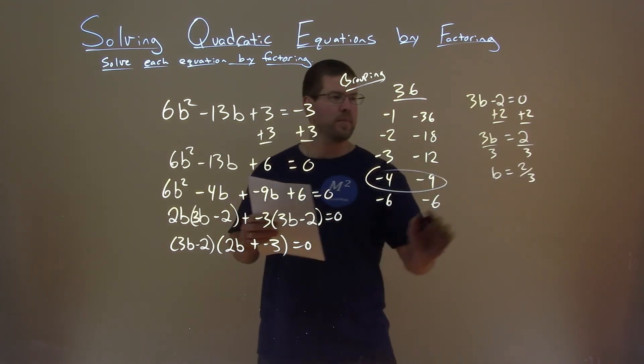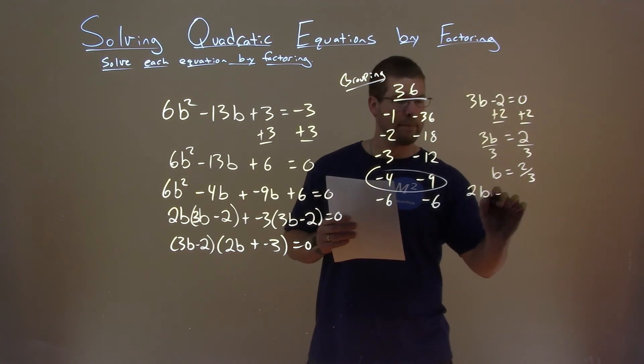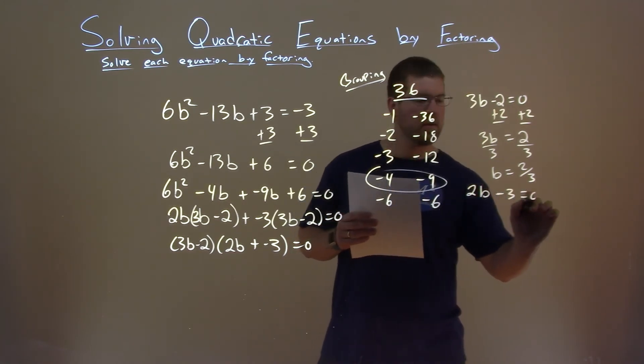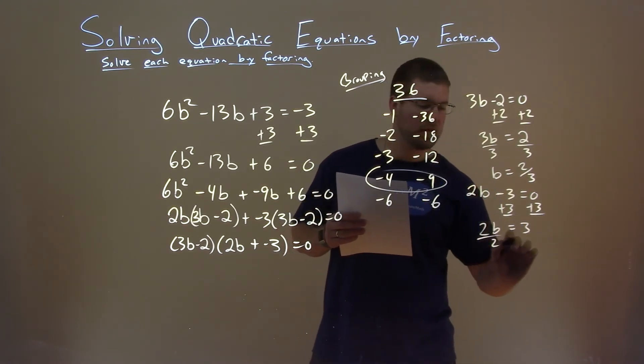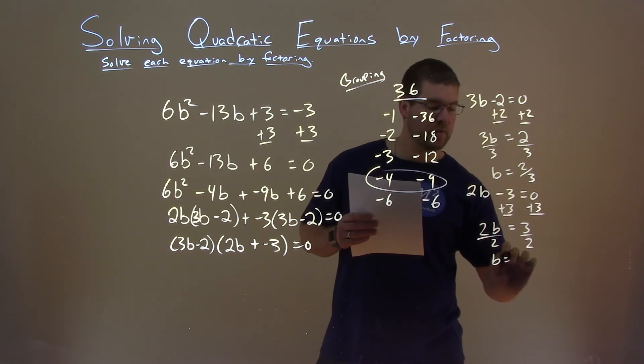Do the same with the second one. 2b minus 3 here, equals 0. We're going to add a 3 to both sides. 2b comes down, equals a positive 3. Divide both sides by 2. And b equals 3 halves.